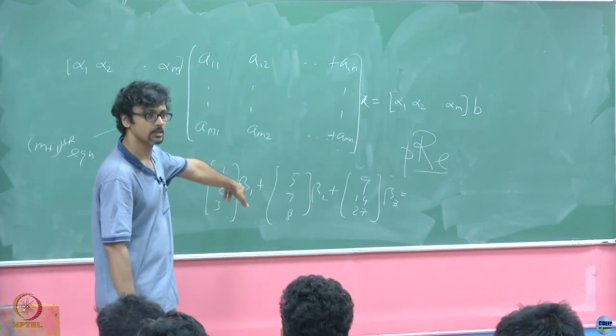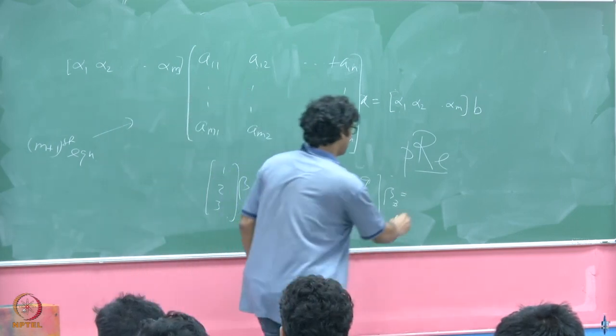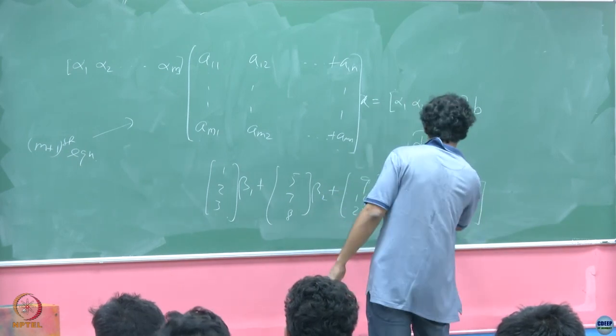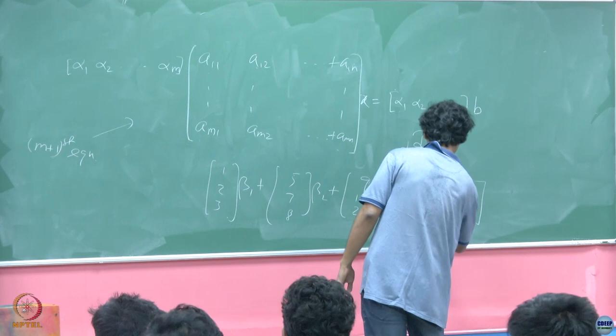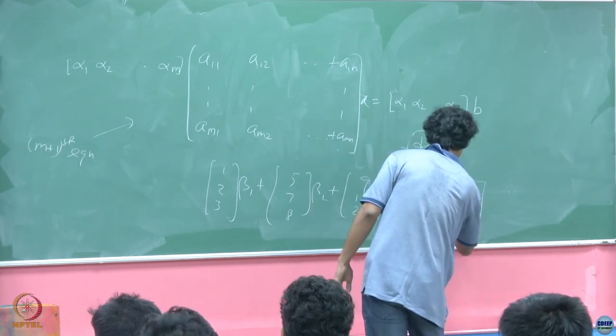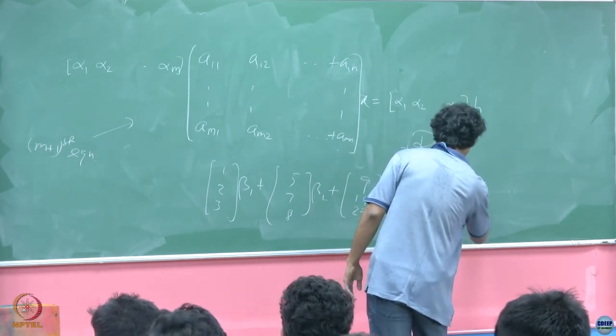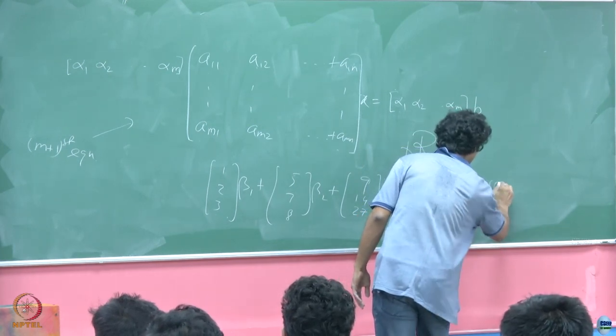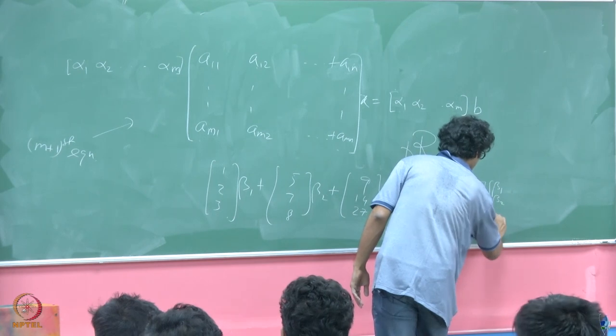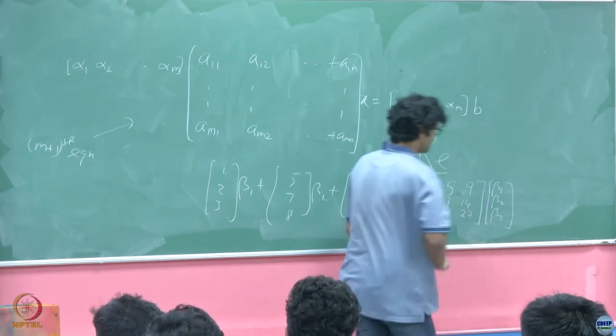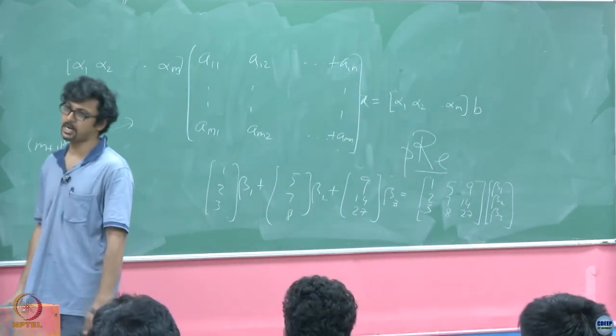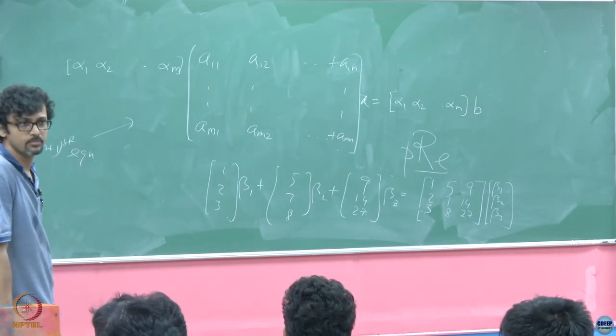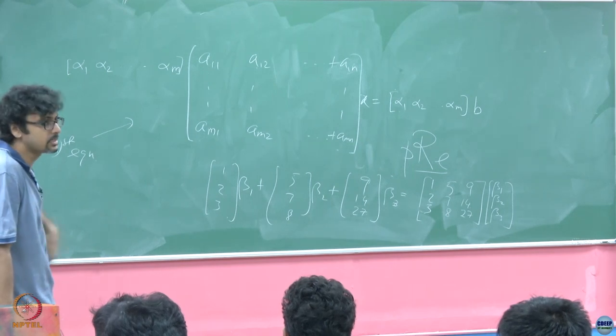Just like if I tell you that there is this [1, 2, 3; 5, 7, 8; 9, 14, 27] and this is beta_1 plus beta_2, then beta_2 plus beta_3. Isn't that the same as post multiplication of the matrix times [beta_1, beta_2, beta_3]? So post multiplication is basically combining columns, pre multiplication is essentially combining rows.